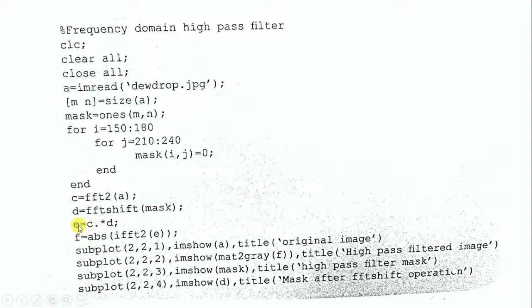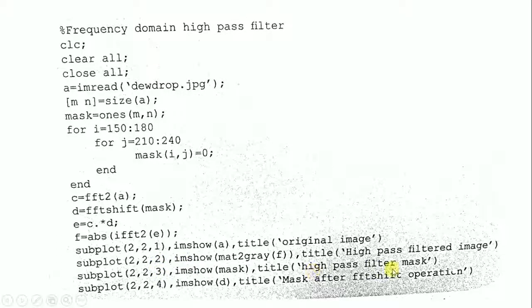The result is considered as E. After that, we apply the inverse fast Fourier transform of E to get the filtered image at the output. We take the absolute values using abs. In the subplot with two rows and two columns: the first image is the original image, the second is the high pass filtered image, the third is the high pass filtered mask, and the fourth is the mask after the FFT shift operation.